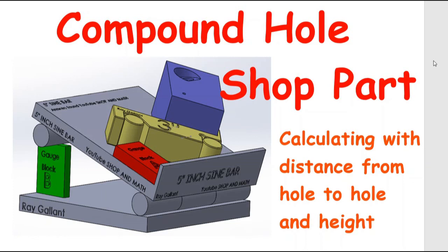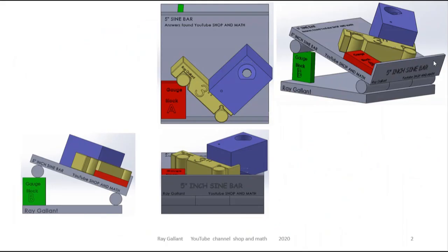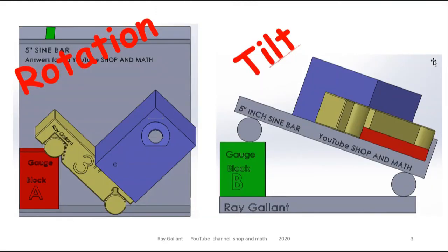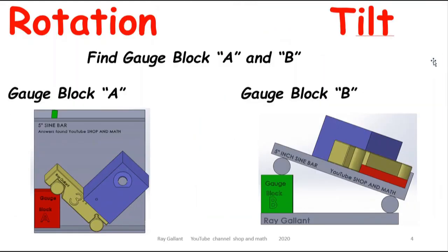Compound hole calculations using the distance from hole to hole and height. Our setup is going to look similar to this. We're going to need to calculate our tilt and rotation. The end result is we want to find the gauge block height for A and the gauge block height for B.